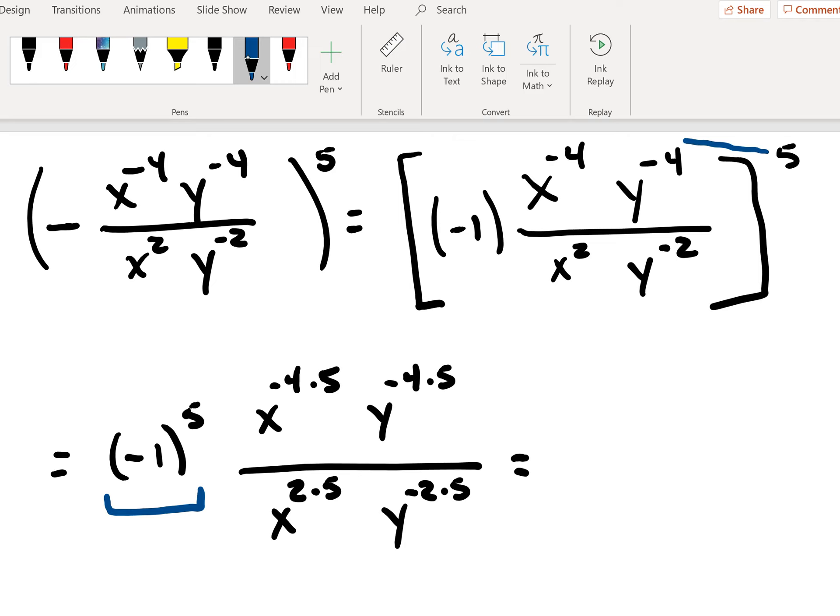You would have had five times negative four giving you x to the negative four times five. Five times negative four giving you y to the minus four times five. And then for the denominator, you have x to the two times five.